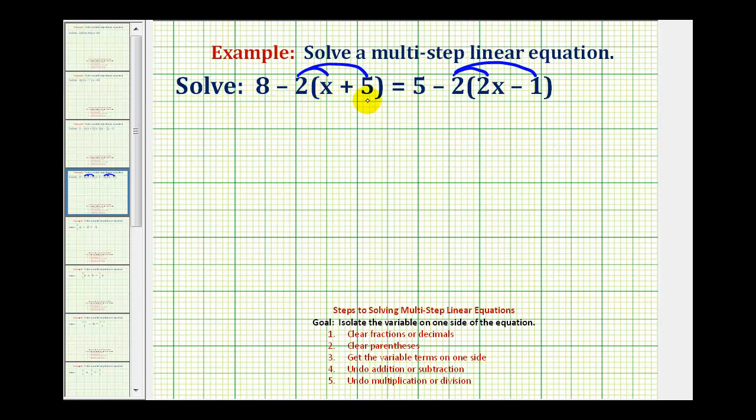So on the left side of this equation, we're going to have eight, and then negative two times x is negative two x, but instead of writing plus negative two x, we'll just write minus two x. And then negative two times positive five is negative ten. And again, instead of writing plus negative ten, we'll just write minus ten, equals on the right side, we'll have five, and then negative two times two x is negative four x, so we'll write minus four x, and then negative two times negative one is positive two, so we'll write down plus two.